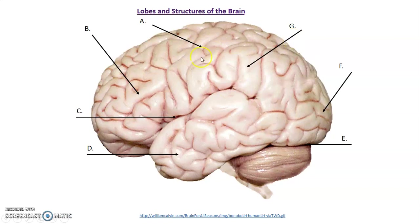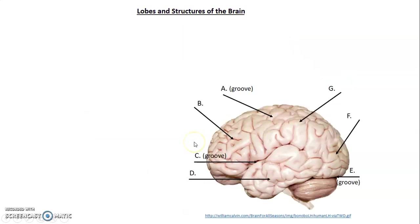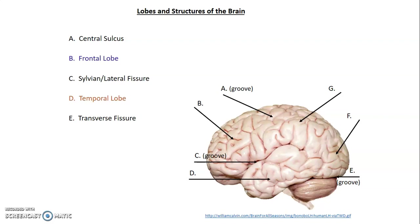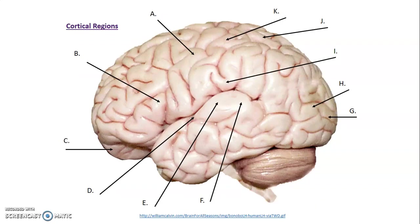For a labeling exercise on the brain diagram: A is the central sulcus, B is the frontal lobe, C is the lateral fissure of Sylvius, D is the temporal lobe, E is the transverse fissure, F is the occipital lobe, and G is the parietal lobe. The precentral gyrus anterior to the central sulcus is the primary motor area, and the postcentral gyrus posterior to it is the primary sensory area.